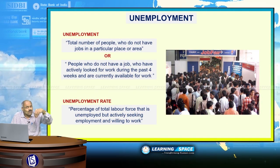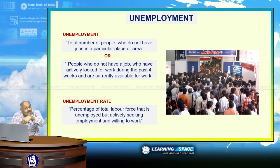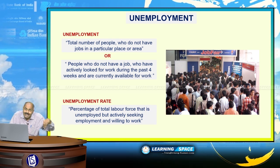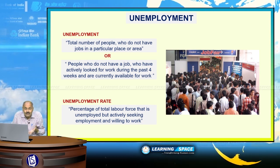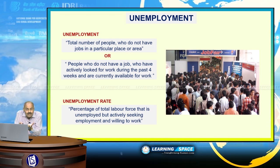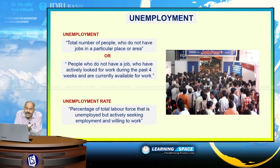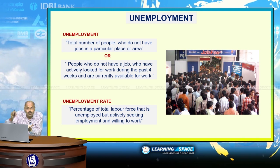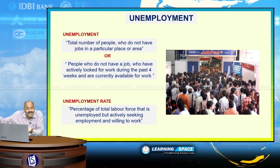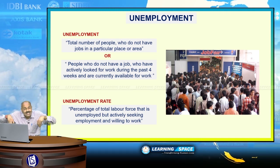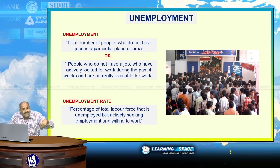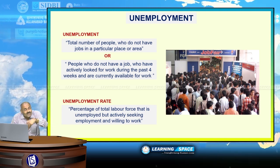Unemployment is basically the total number of people who do not have jobs in a particular place or area, and it is normally expressed in percentage terms as the unemployment rate. For example, if the total labour force in a locality is 100, and out of 100, 8 people have no jobs — they want to work but are not getting jobs — then 8 out of 100 means an 8% unemployment rate.